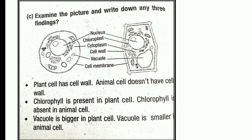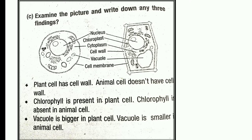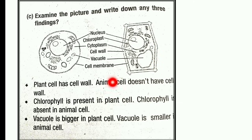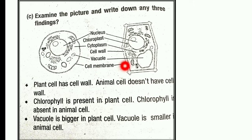An important question: plant cell has a cell wall, and animal cell doesn't have a cell wall. Chlorophyll is present in plant cells but not in animal cells. Vacuole is bigger in plant cells and smaller in animal cells.